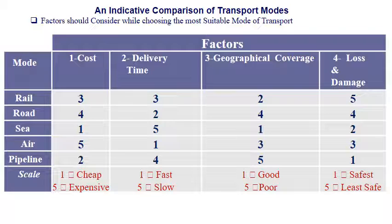The comparison scale: for cost, 1 means cheap and 5 means expensive. For delivery time, 1 means fast and 5 means slow. For geographical coverage, 1 means good and 5 means poor. For loss and damage, 1 means safest and 5 means least safe.